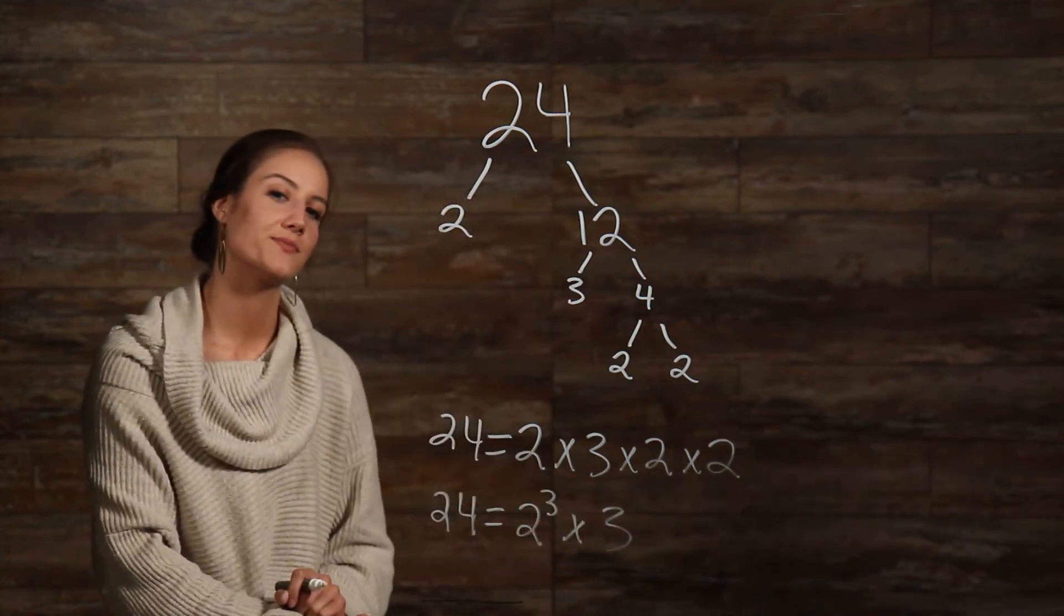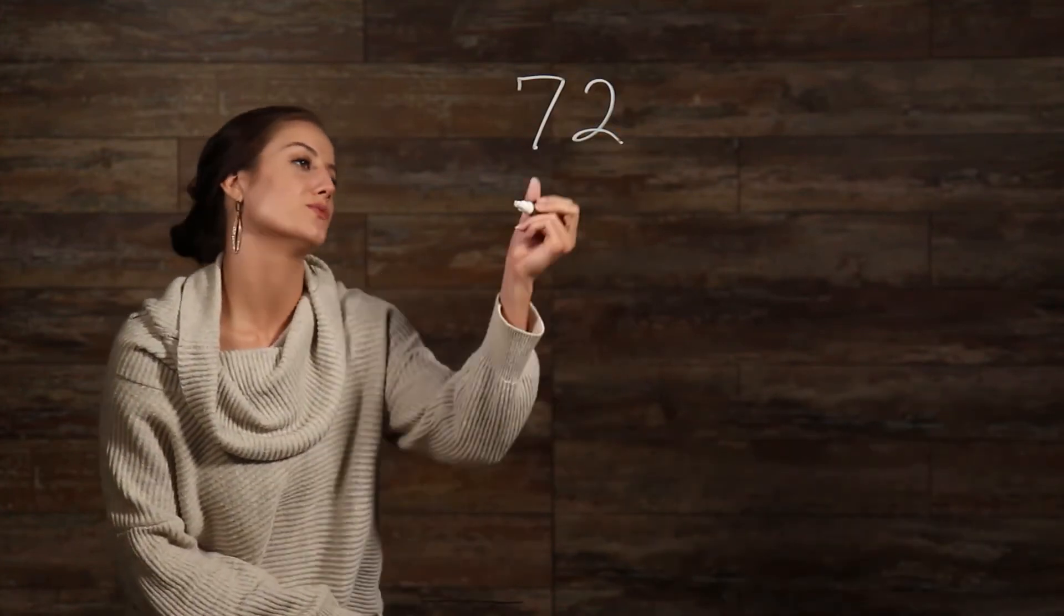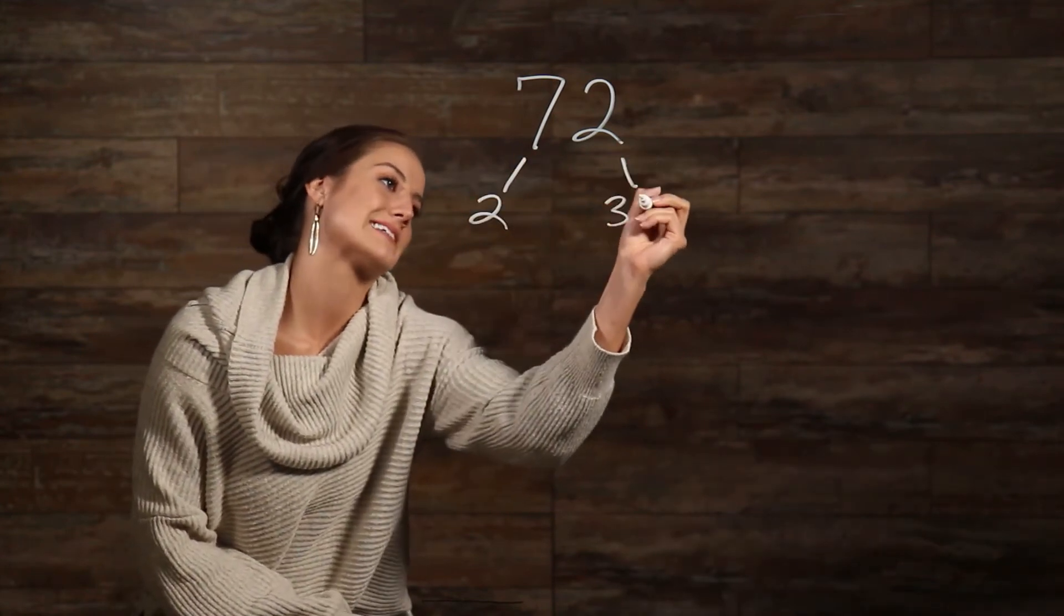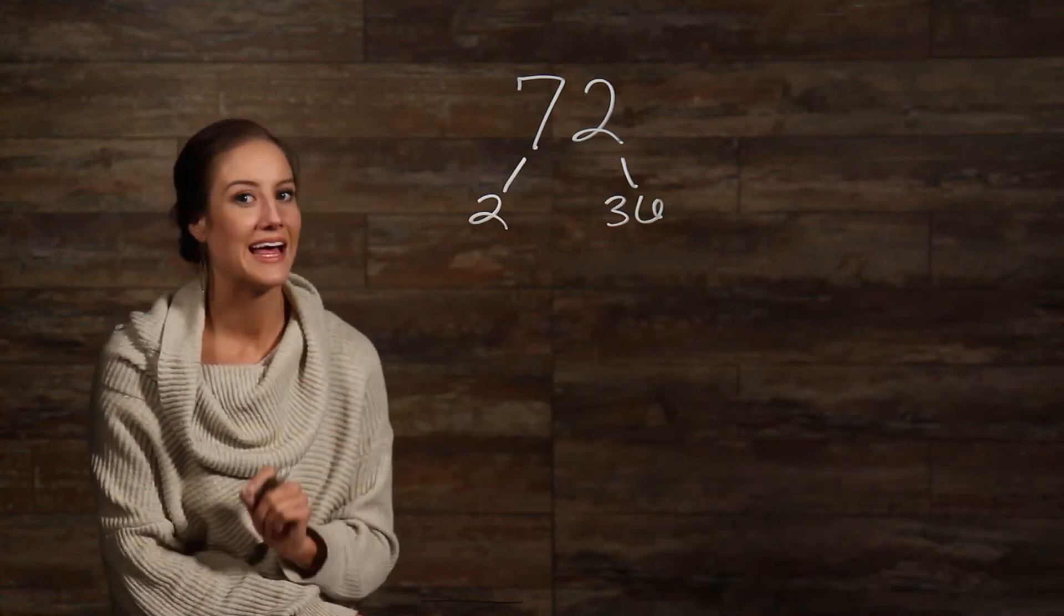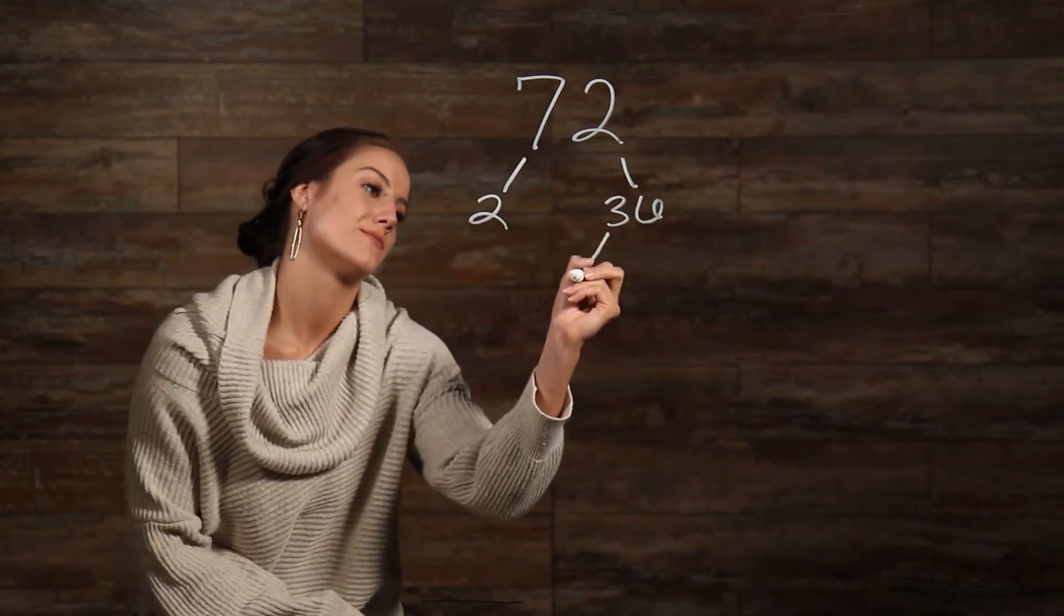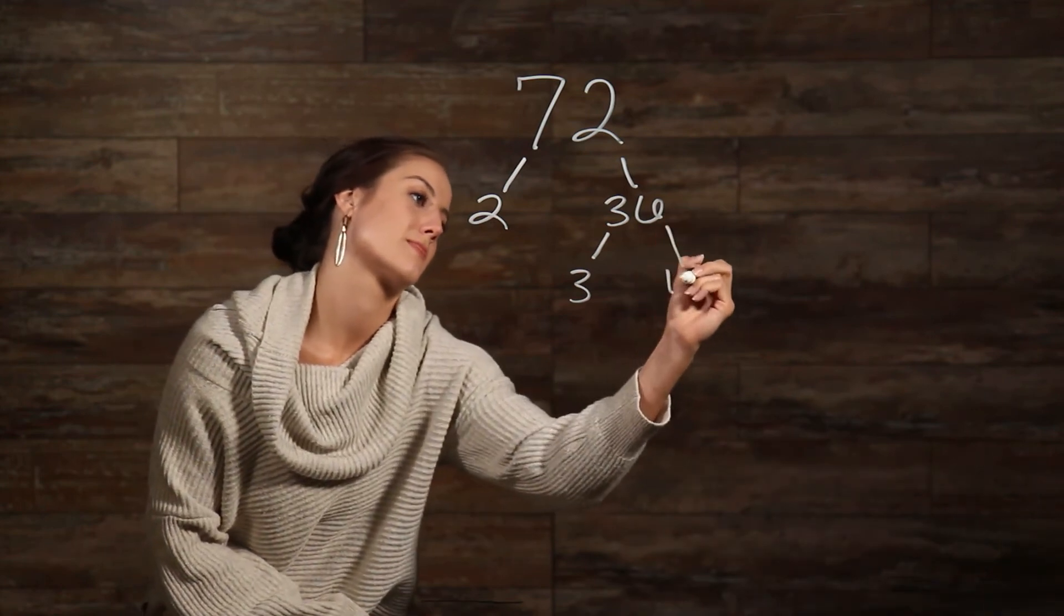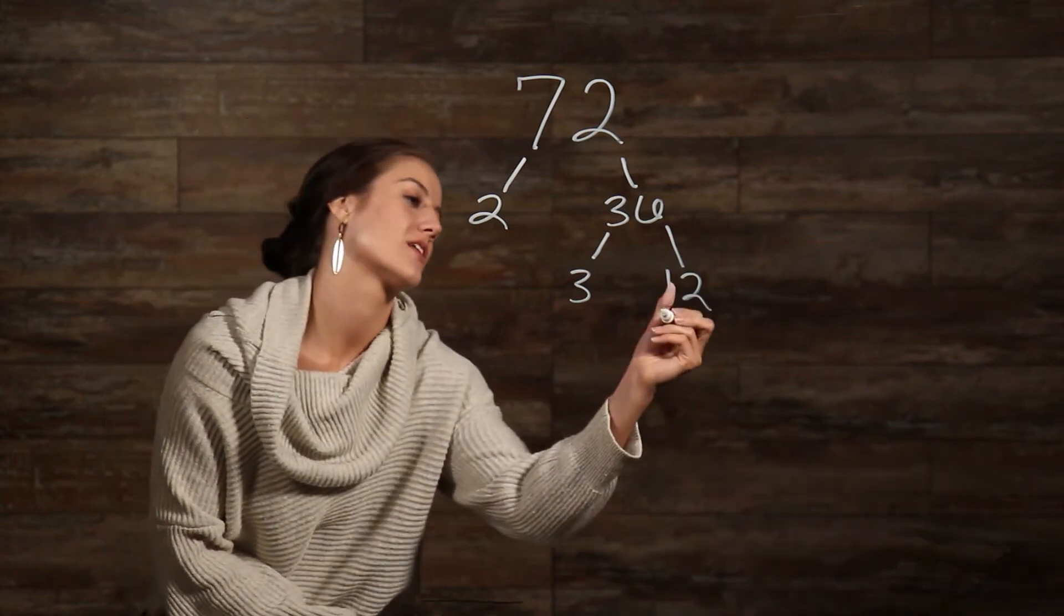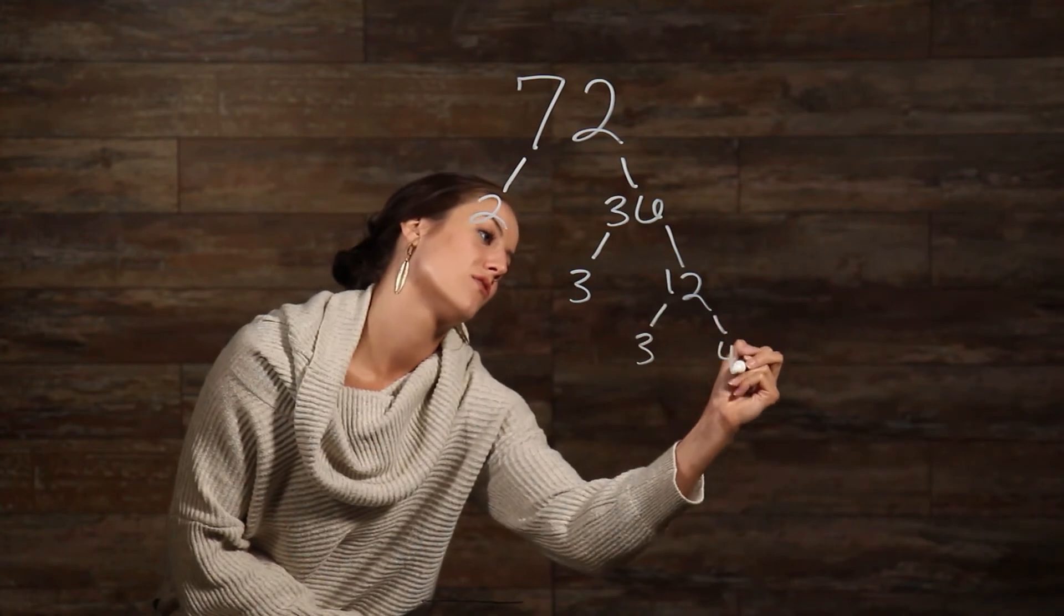Let's take a look at another one. What is the prime factorization of 72? Let's start with 2. 2 goes into 72, 36 times. But 36 is not a prime number, so we must go further. Let's try 3 now. 3 goes into 36, 12 times. But 12 is not a prime number. Let's try 3 again. 3 goes into 12, 4 times.